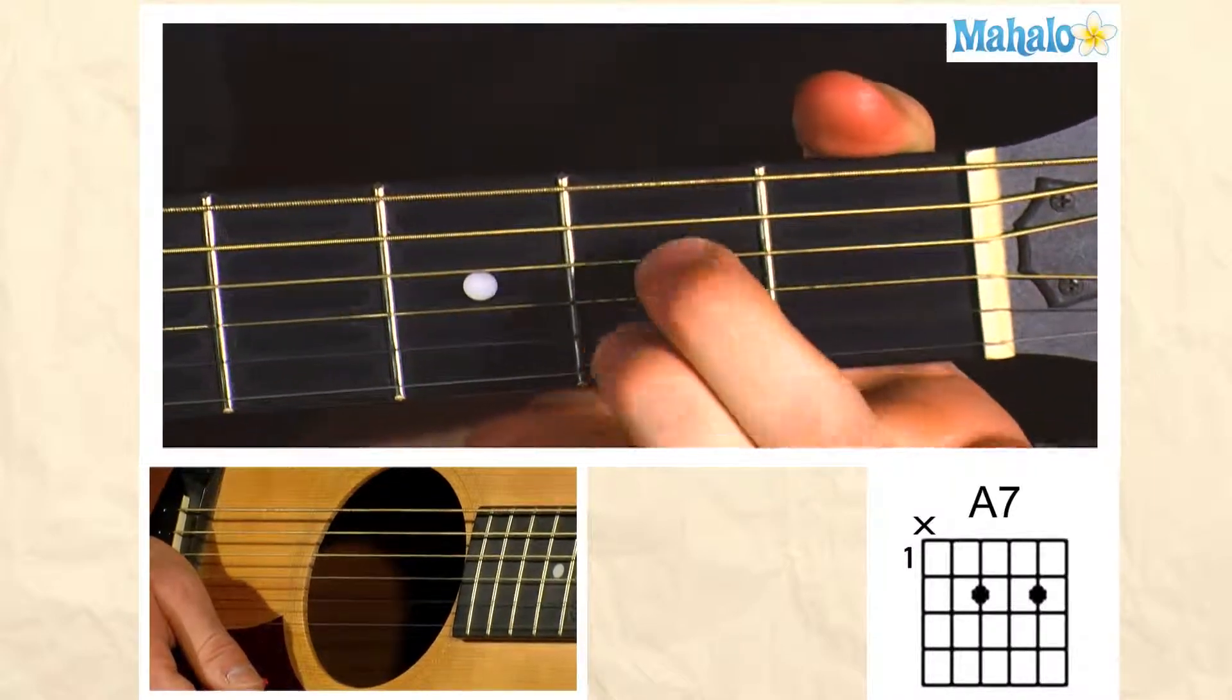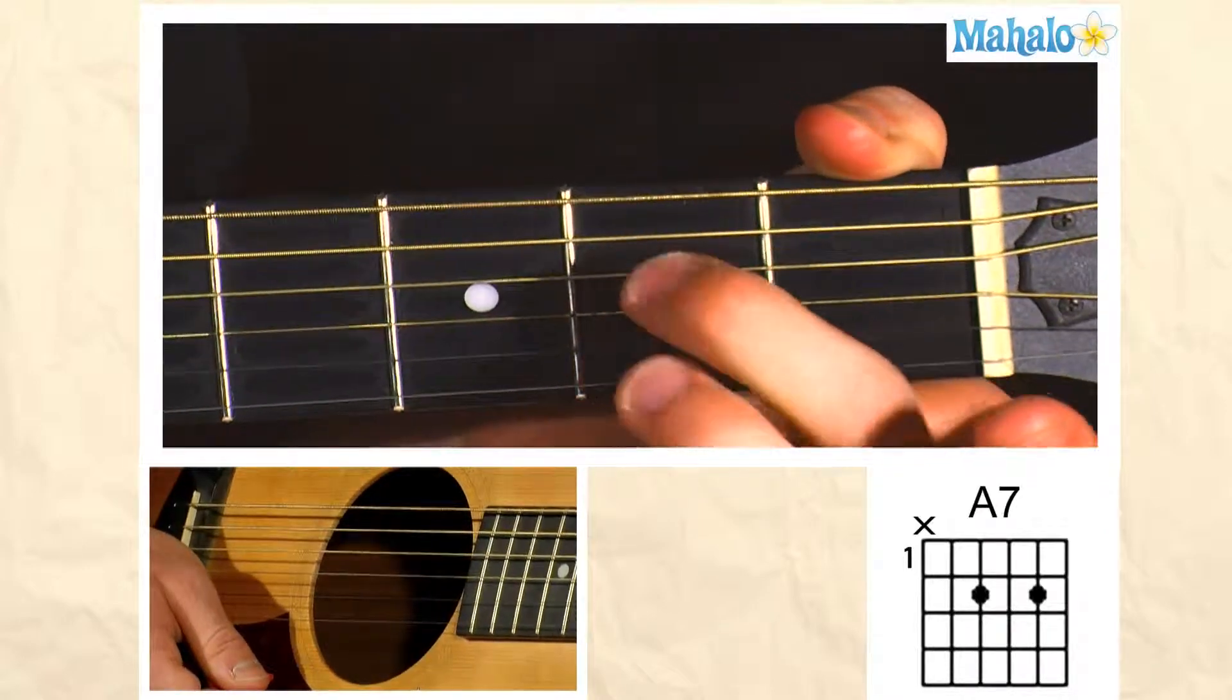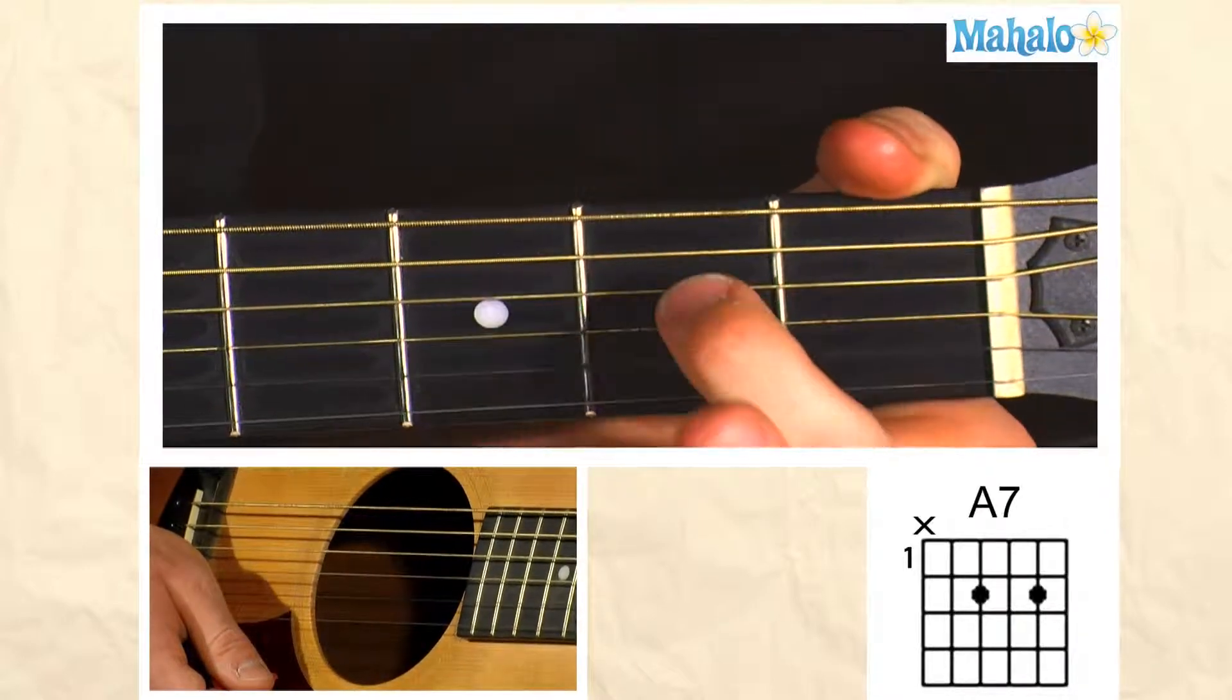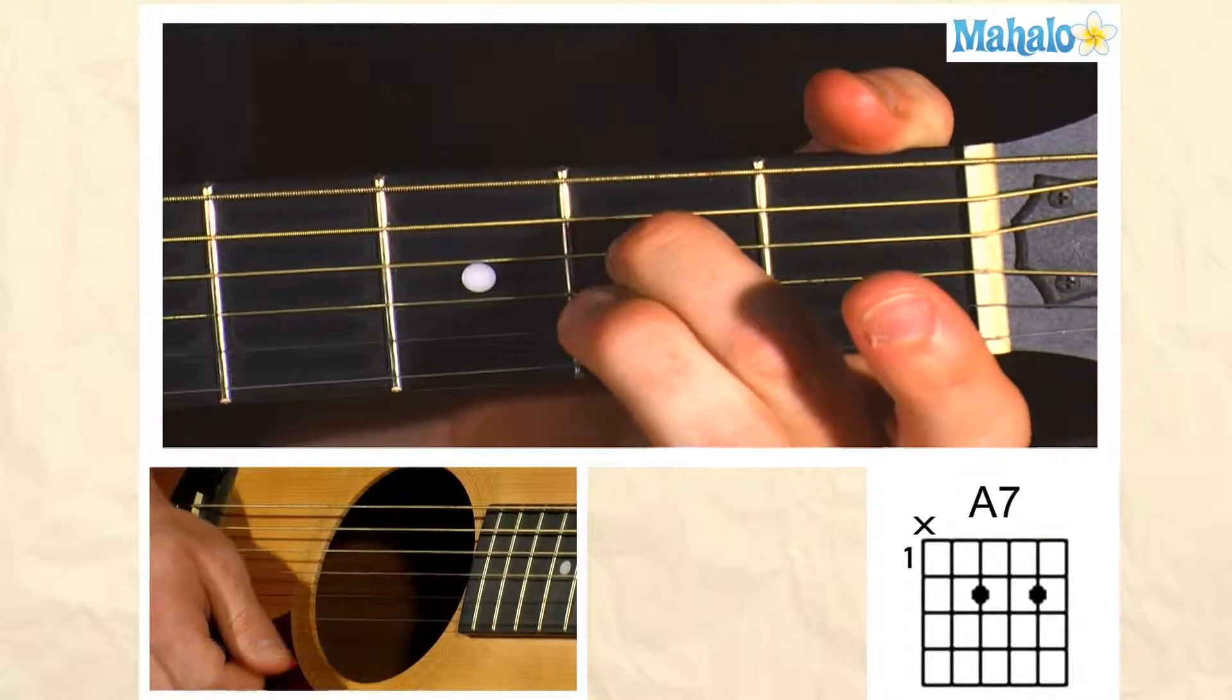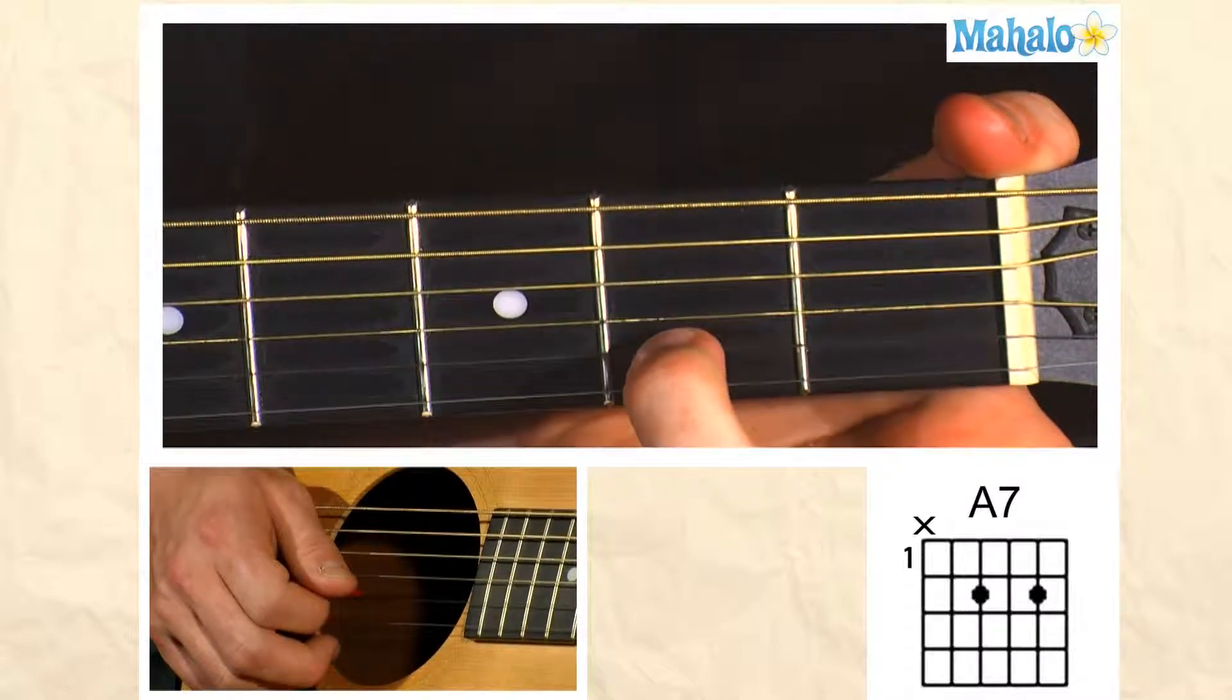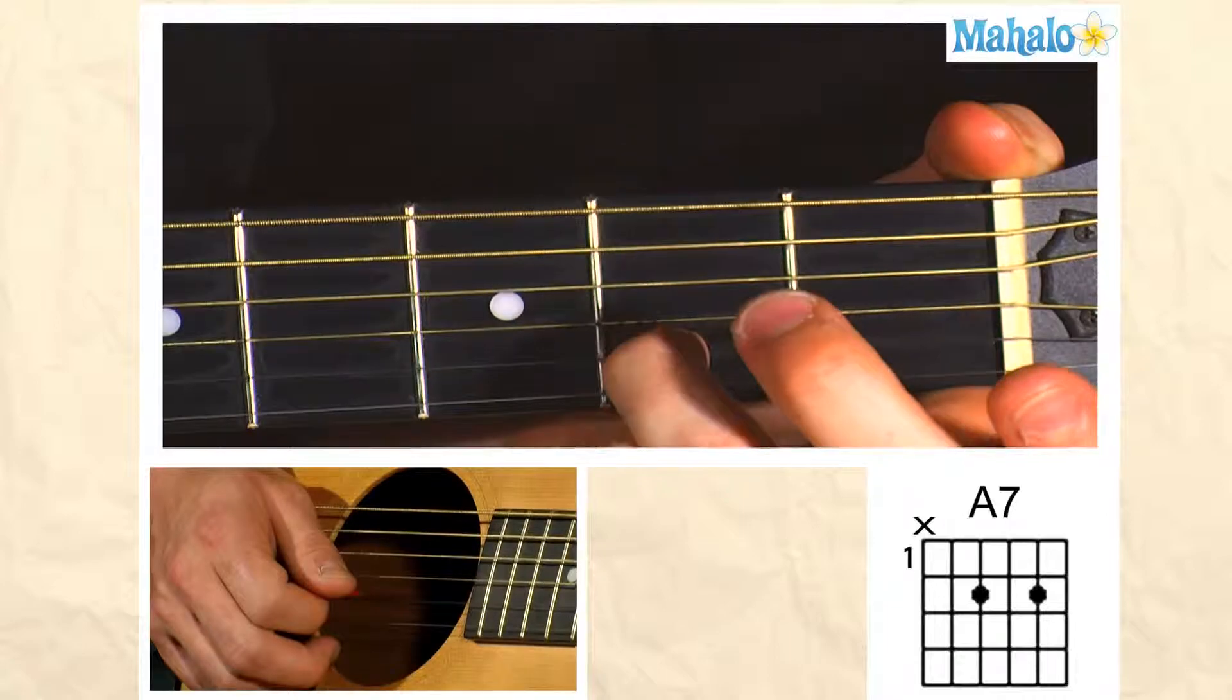It's just going to use these two fingers, fingers 2 and 3. We're going to put it on the second fret, finger 2, on the second fret, on the D string. Then we're going to skip a string and we're going to put our other finger, our third finger, on the second fret.